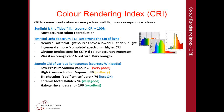Here are some sample CRIs of various light sources. Low pressure sodium vapor is 5, which is very poor. High pressure sodium is 49, which is ordinary. Tri-phosphor white fluorescents, used in offices around Australia, are at 76, which is just okay. Ceramic metal halides, used in sports stadiums, score 96, which is very good. Halogen incandescent is 100 — one of the reasons halogen downlights are used in shop display windows, particularly for clothes, because they give very accurate color reproduction despite being somewhat more yellow than sunlight.